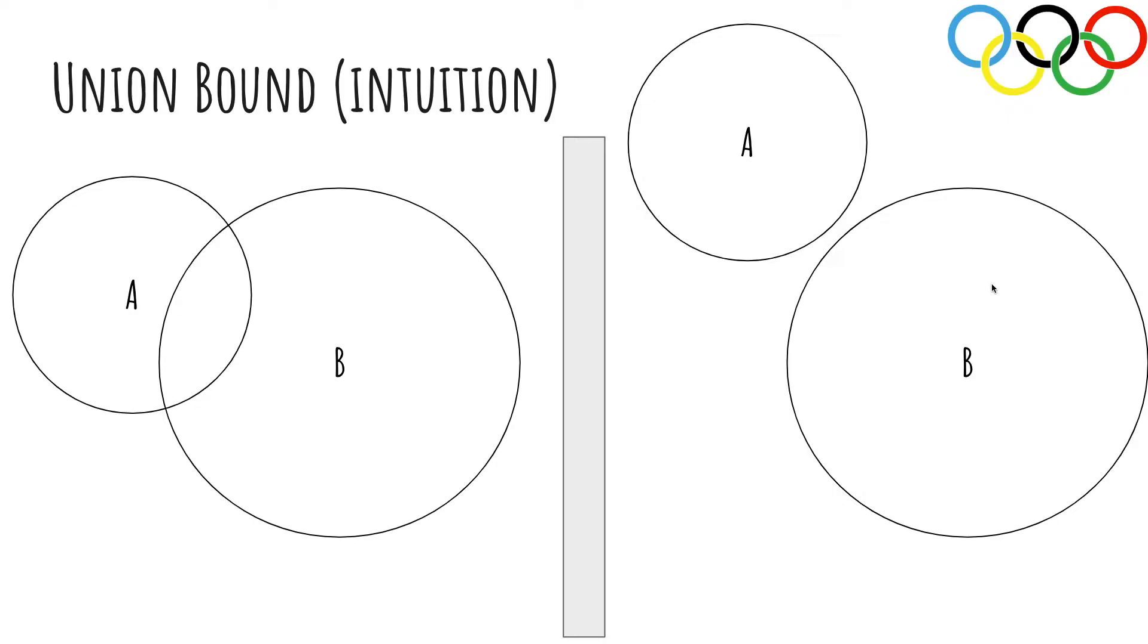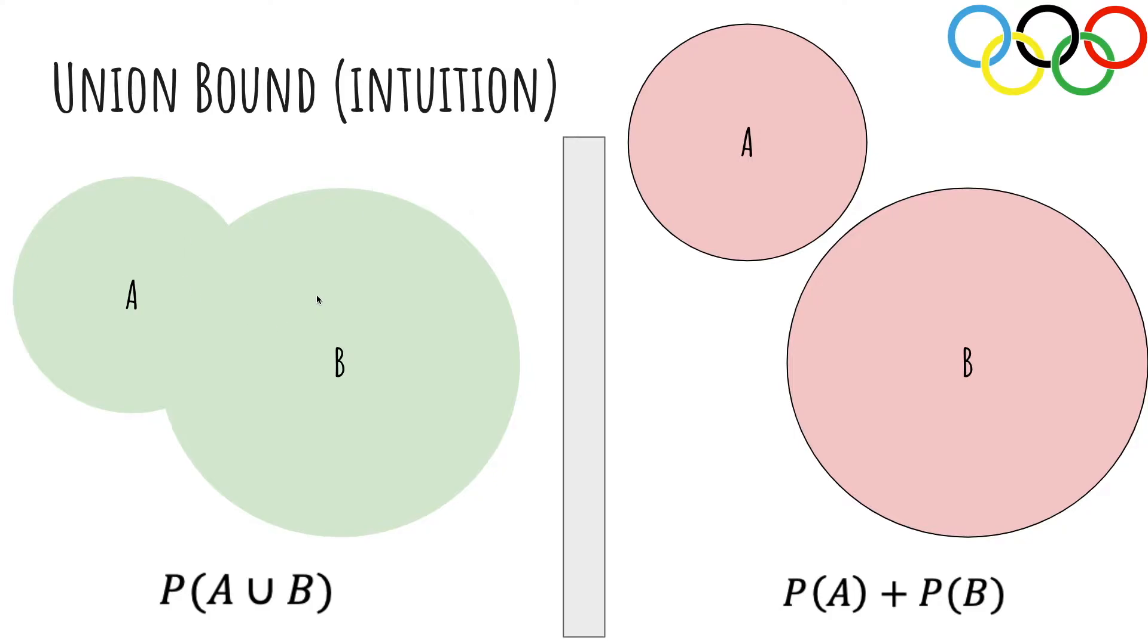So the union bound basically says that the area on the left-hand side is less than the area on the right-hand side. The area on the left-hand side is the probability of A union B, and the area on the right-hand side is the probability of A plus the probability of B. This inequality is always true because there could be overlap, and this overlap only takes away from this area.